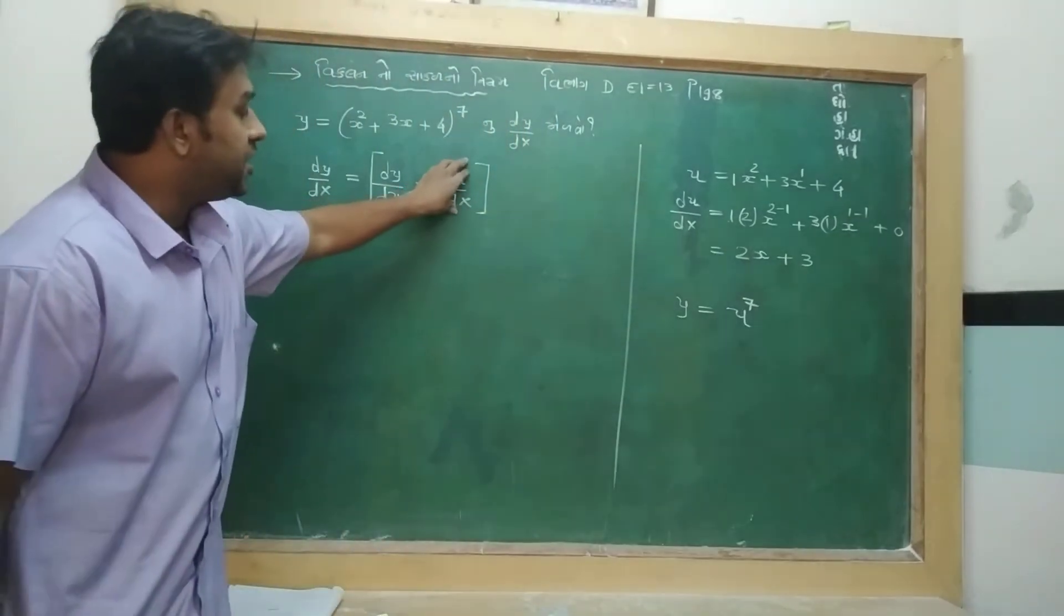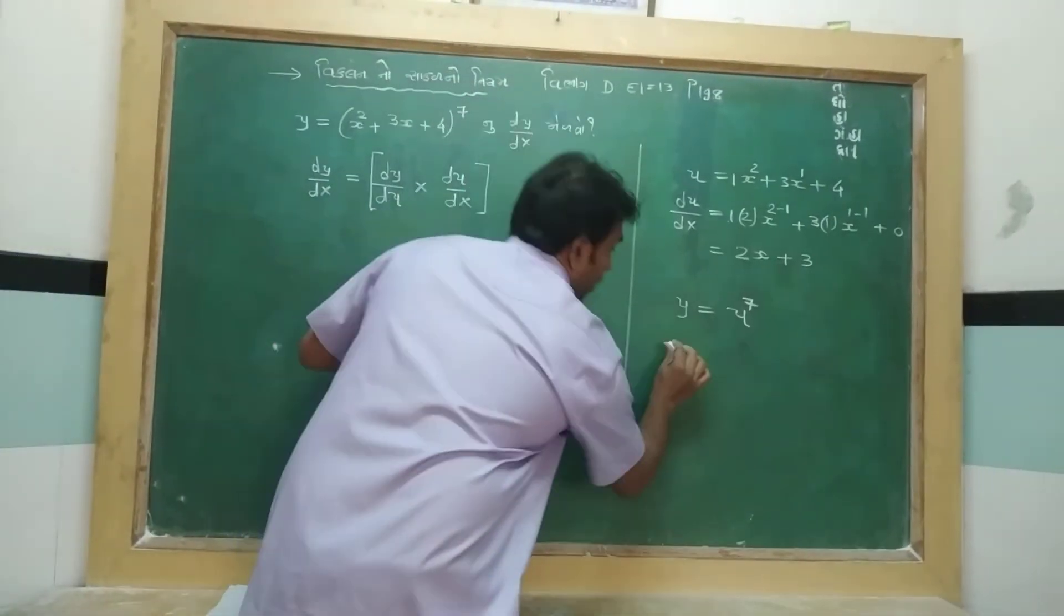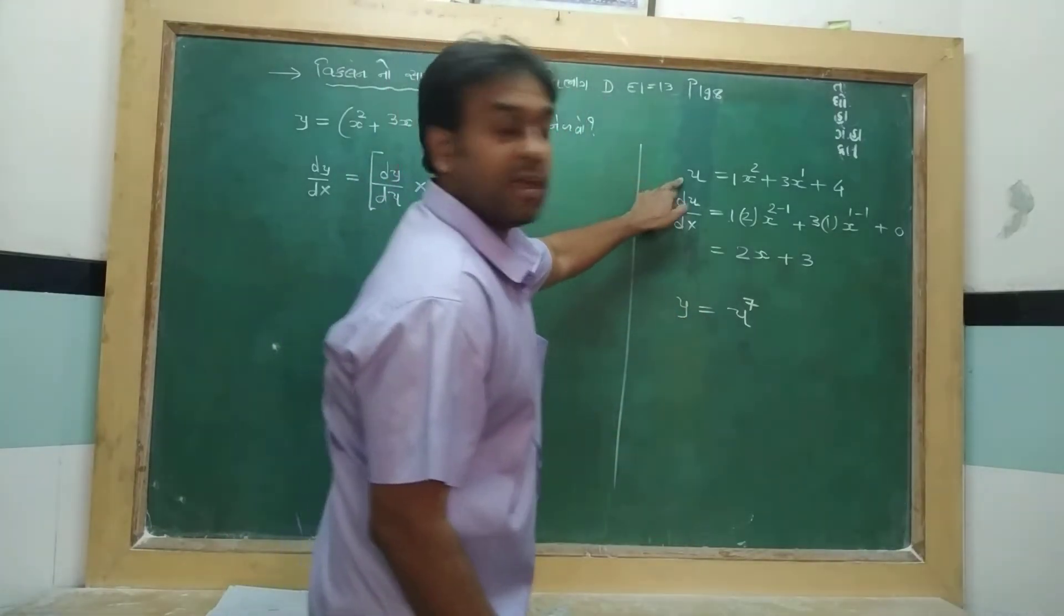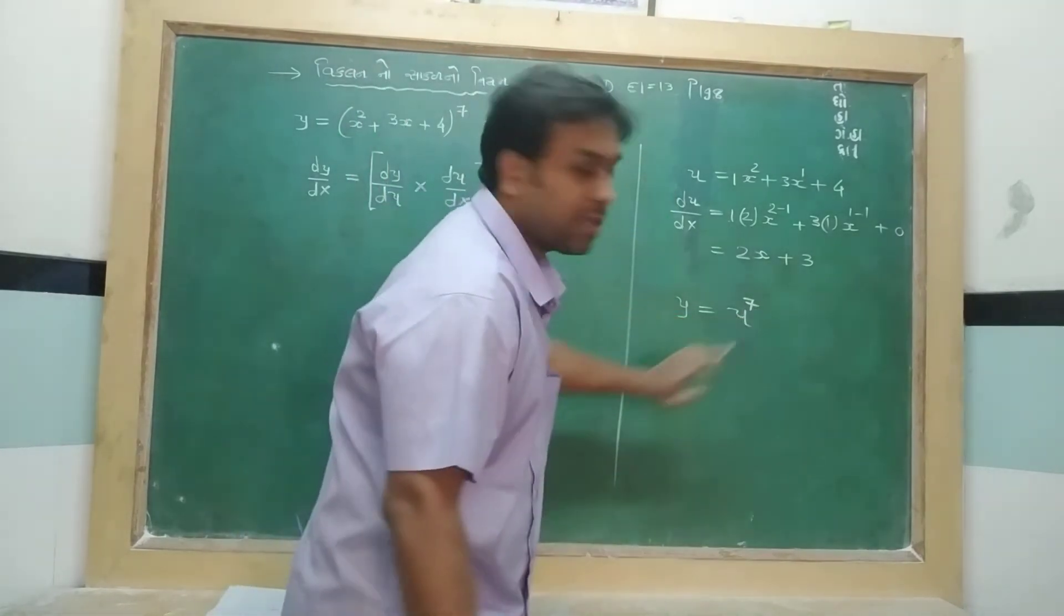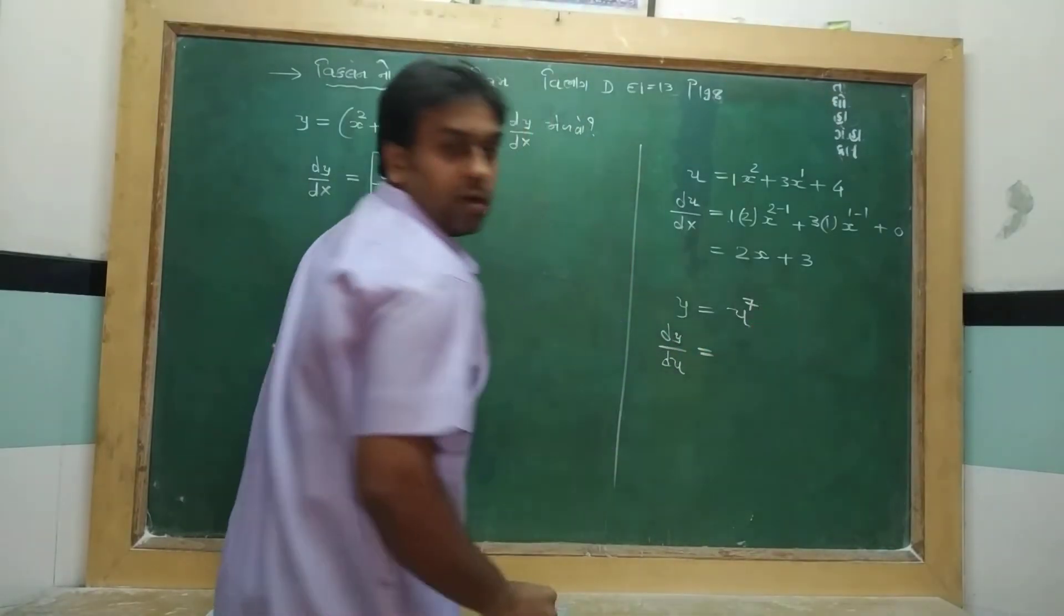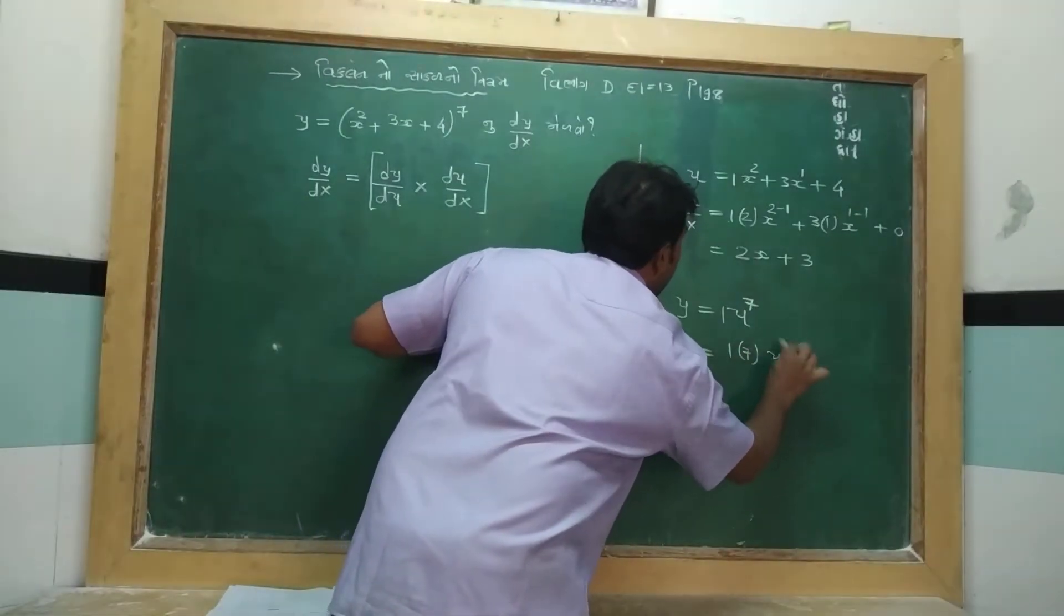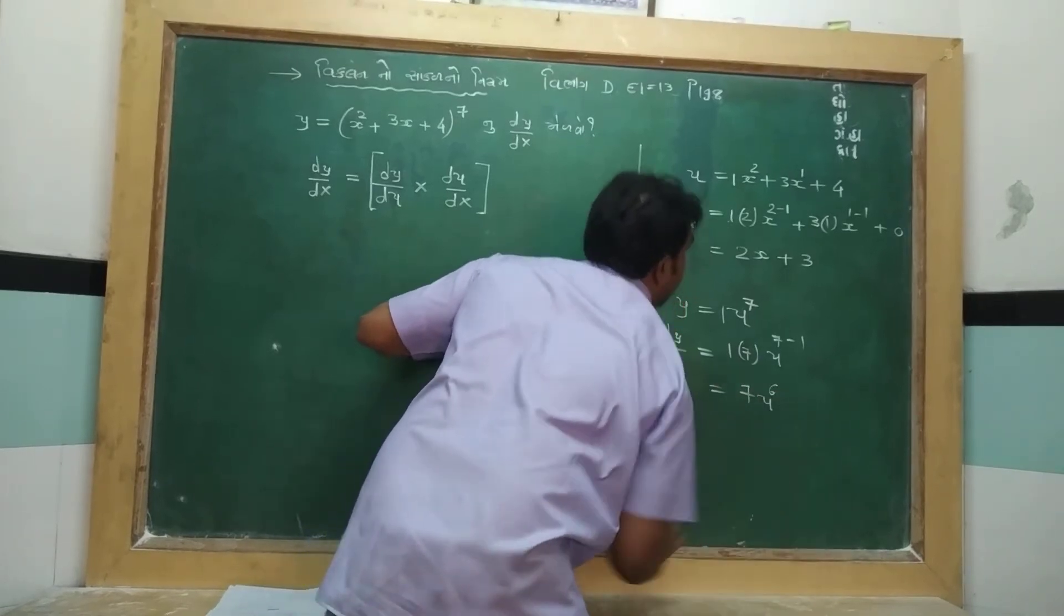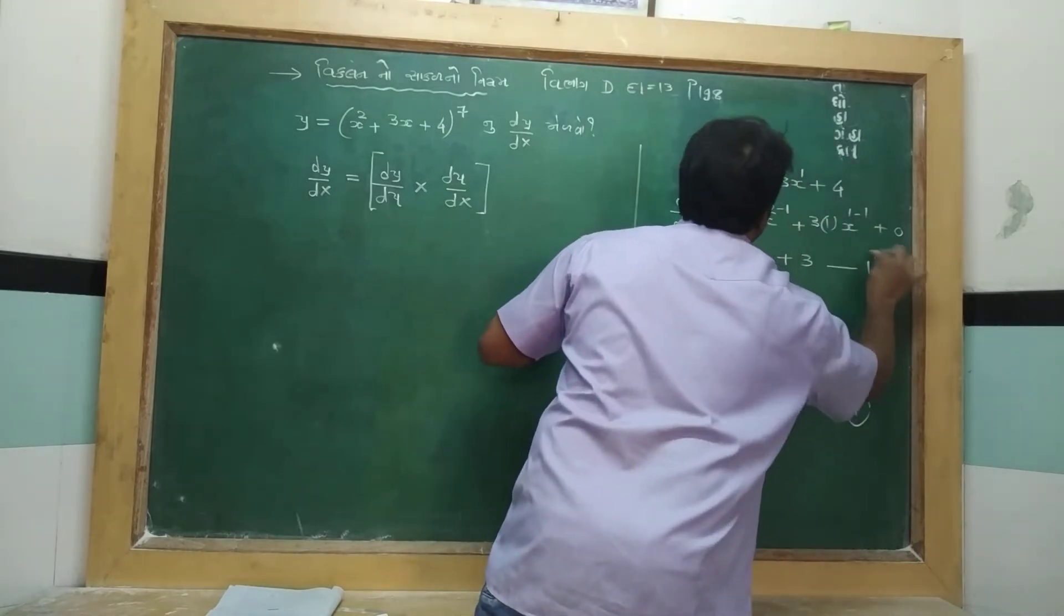So if you want to see du upon dx, then du upon dx, it is greater. And if u is equal to y, then dy upon du, u is equal to u. So dy upon du. If this person has 1, then it's 1 minus 7. And you need 5 minus 1, special number 7 minus 7 minus 6. So here the result is 1, and here the result is 2.